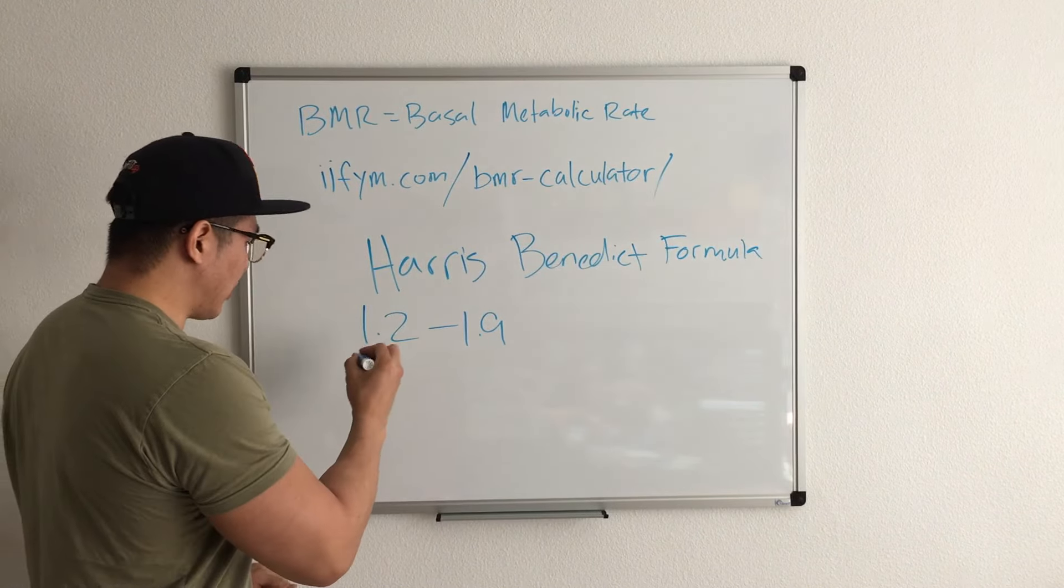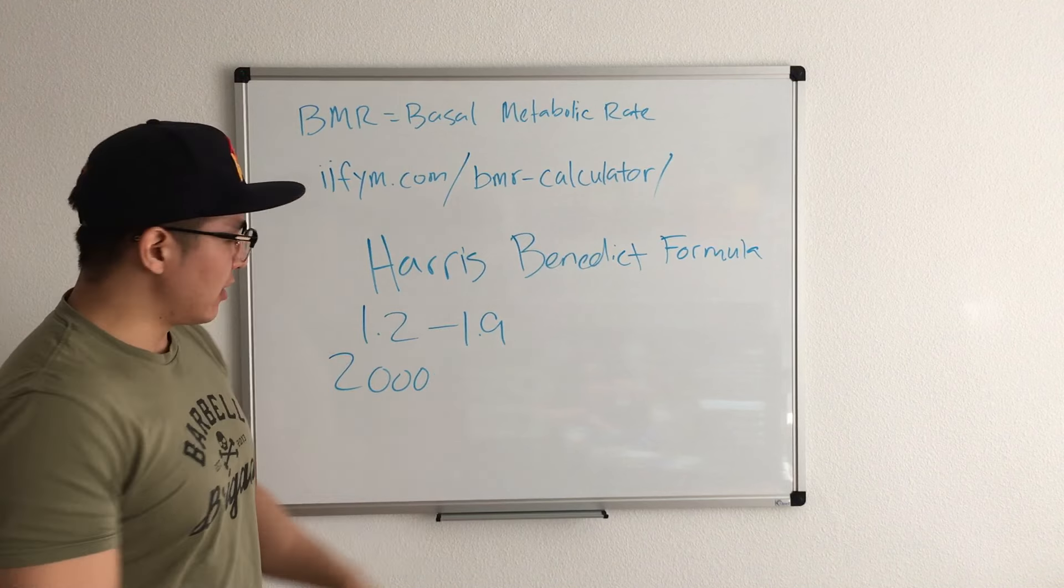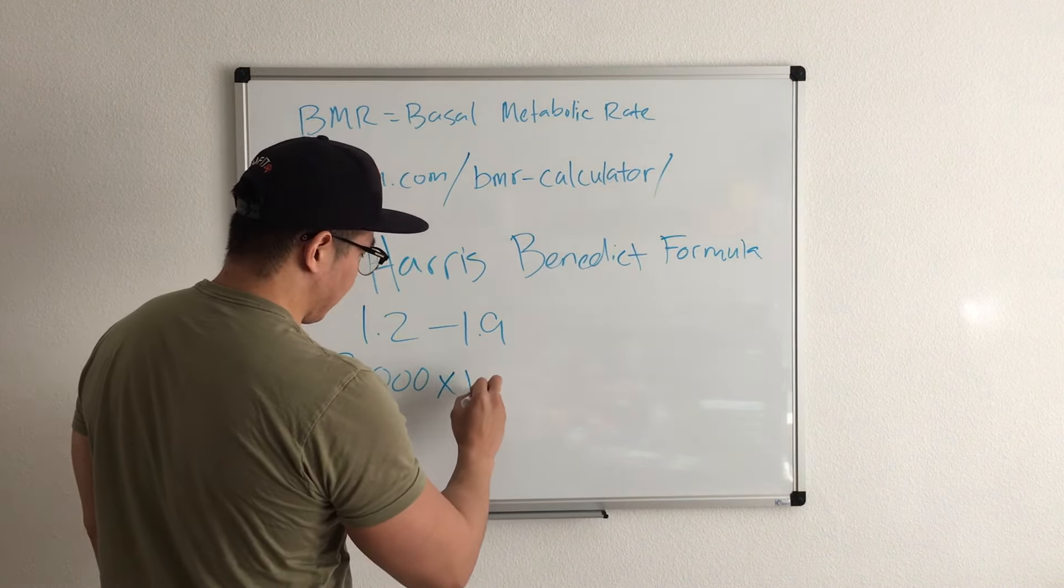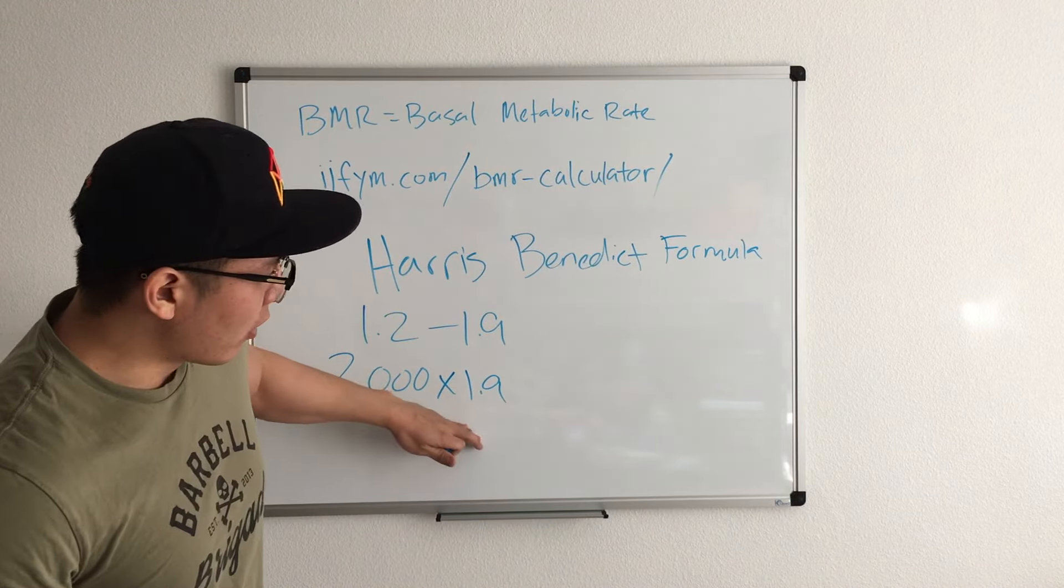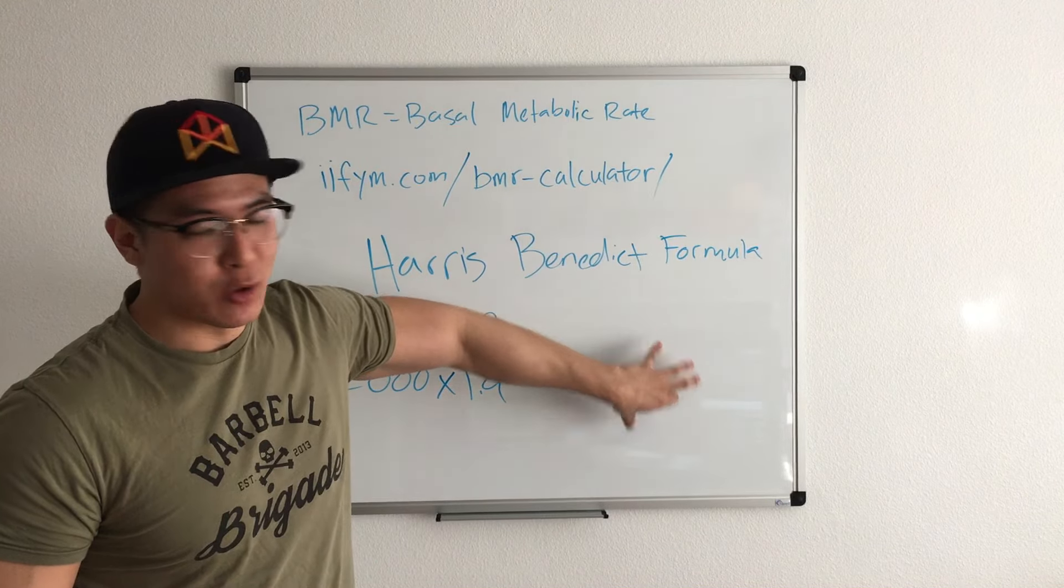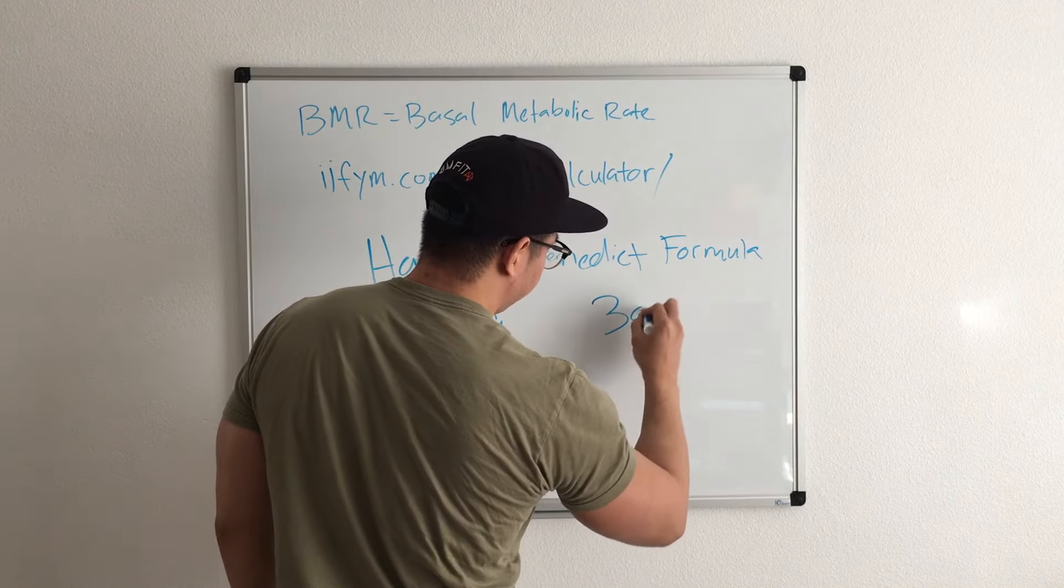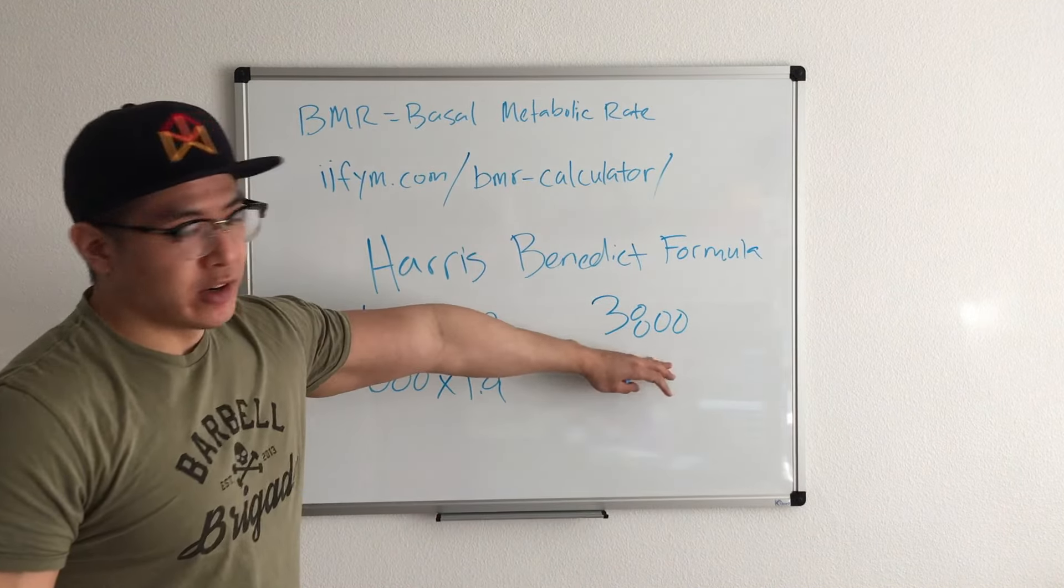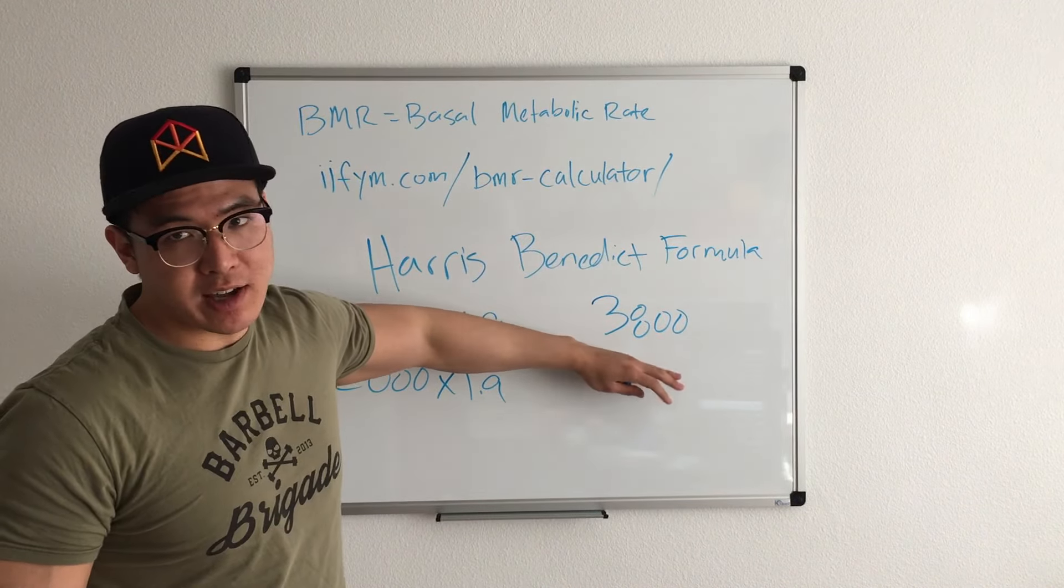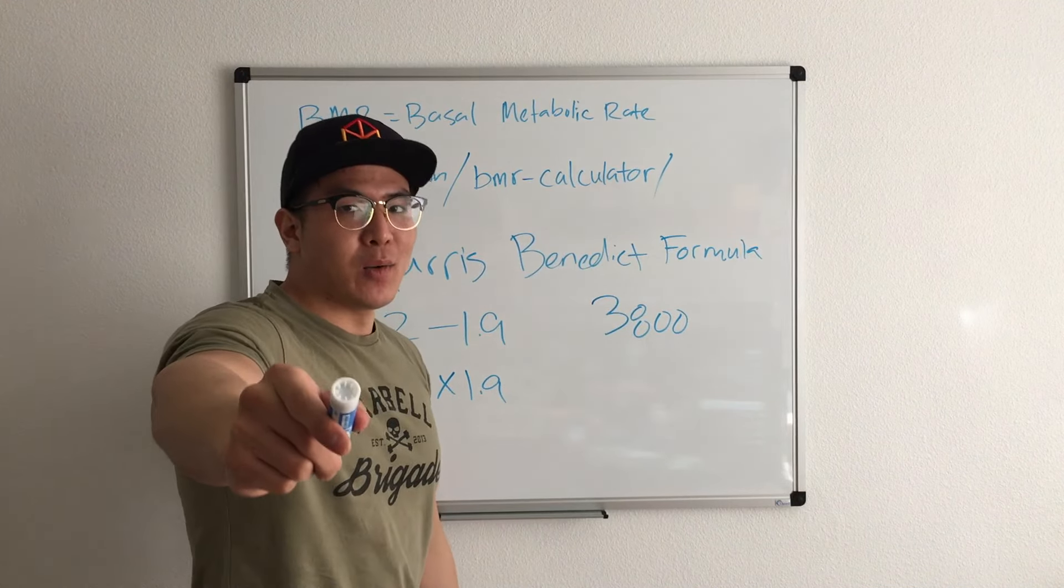So let's say a person's BMR is 2,000, and let's say he's a professional athlete—then he'll multiply that by 1.9, and that total number is how much you need to eat to maintain your weight. So if you multiply this, it should come out to be 3,800. That's for this individual—you need to eat 3,800 calories to maintain that weight.